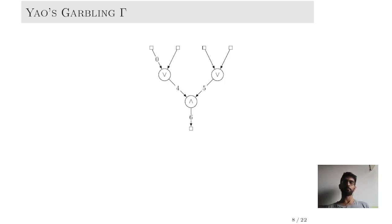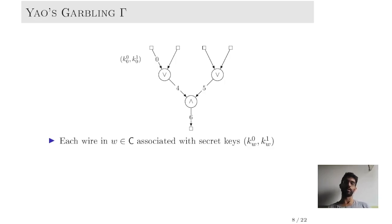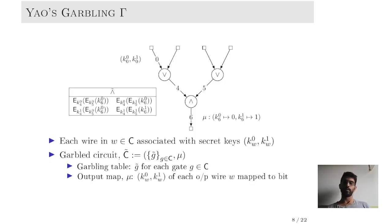Finally, we explain Yao's garbling. Recall that Yao's garbling is built on top of a symmetric encryption scheme. The first step is to associate each wire W in the circuit C to a pair of secret keys kW0 and kW1. Next, Alice computes the garbled circuit C tilde, which consists of two components: a garbling table and an output map. The garbling table is associated with each gate of the circuit, and for each gate G, the garbling table encodes the gate table of the underlying gate G.